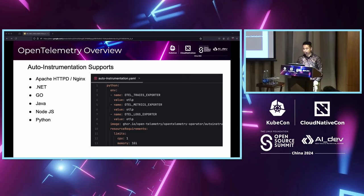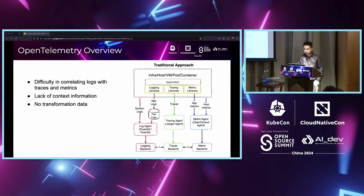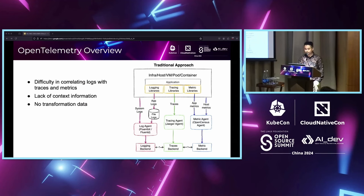Auto-instrumentation reduces overhead complexity because we don't have to change any line in our applications. In the traditional approach, logs, traces, and metrics are individually sent directly to the telemetry backend, so we cannot have context across the data — for example, logs cannot be connected to traces data. There's also no way to transform the data, since there is no intermediate layer for filtering, exclusion, or advanced transformations.